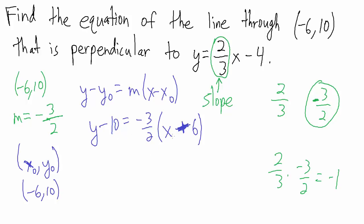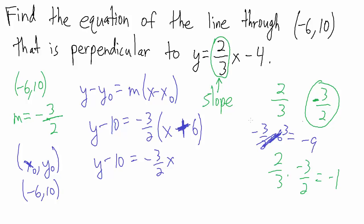Now let's put this in slope-intercept form. Distributing the negative three-halves: y minus ten equals negative three-halves x, and negative three-halves times positive six — since two goes into six three times, negative three times three is negative nine — so minus nine. Adding ten to both sides gives y equals negative three-halves x plus one.